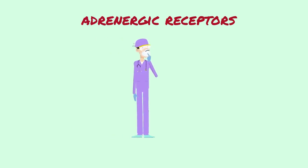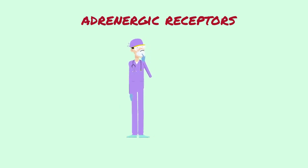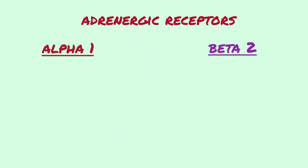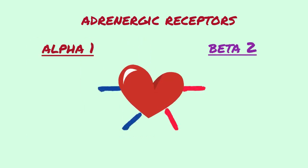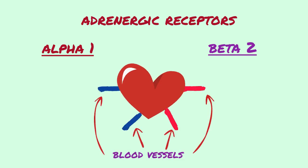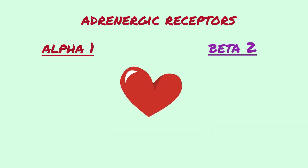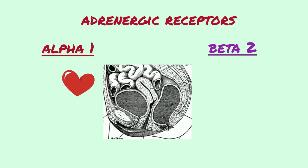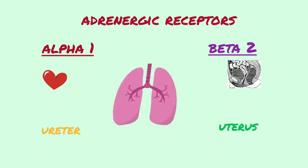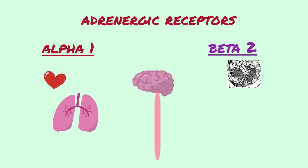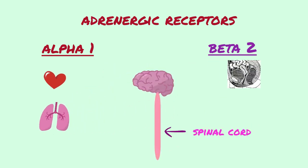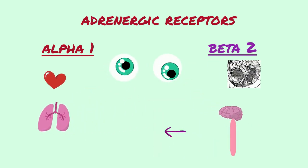Understanding how adrenergic receptor sites function makes it easier to understand how adrenergic drugs work. Alpha-1 and beta-2 receptor sites are located in the smooth muscle tissue of the blood vessels, the heart, ureter, uterus, bronchioles, throughout the nervous system, and even in the muscles that control pupil size.